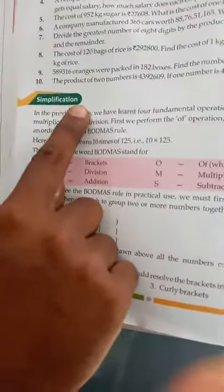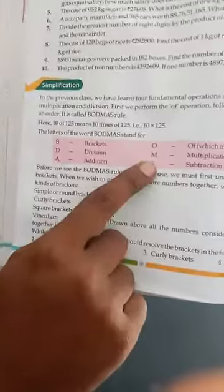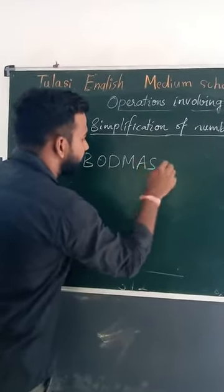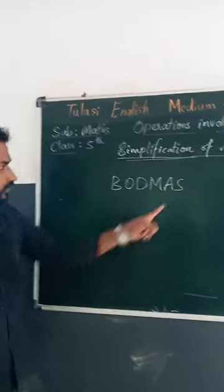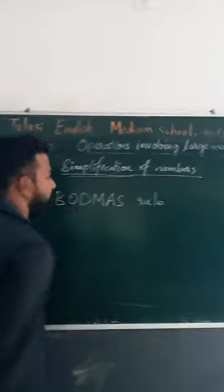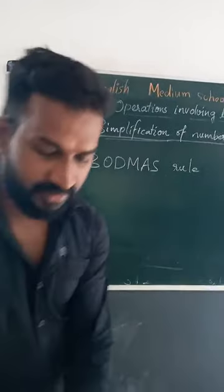In this class we will go for Simplification of Numbers. It's a very important part in this chapter. Simplification of numbers — we have to make it simple. Before simplification we should know the rules. In simplification, there will be this kind of problems.